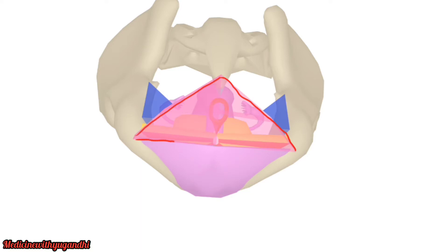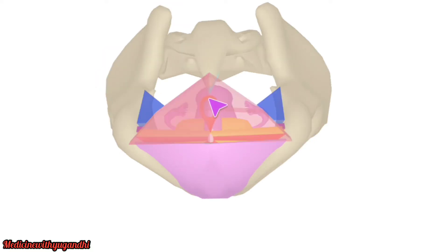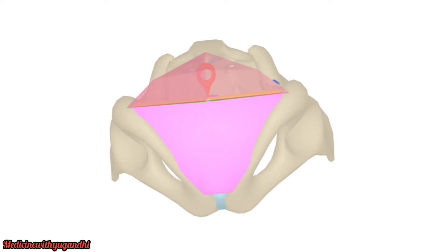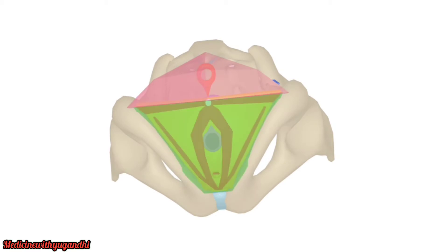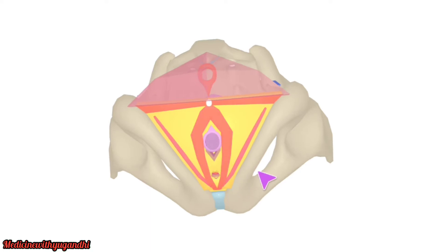This entire portion is the anal triangle, with the ischioanal fossa visible on both sides. Here you can notice the external anal sphincter and the Colles' fascia. Below that is the superficial perineal pouch, and removing that reveals the perineal membrane, the bulbospongiosus, and the ischiocavernosus muscle.